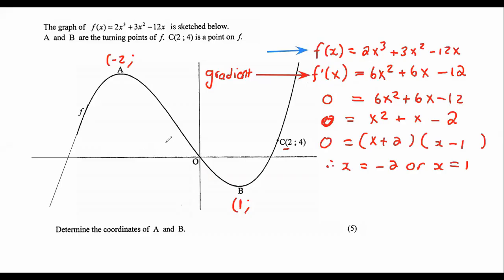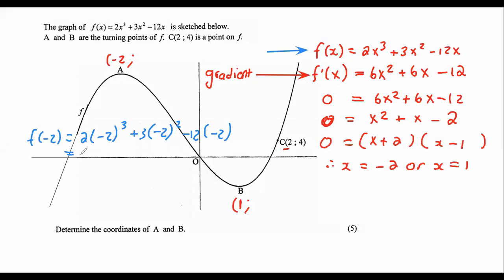So if we plug in negative 2 into the original equation — remember to always put it in brackets, otherwise you won't get the correct answer — this y value should be 20. And then if we plug in x = 1, that gives us y = −7.